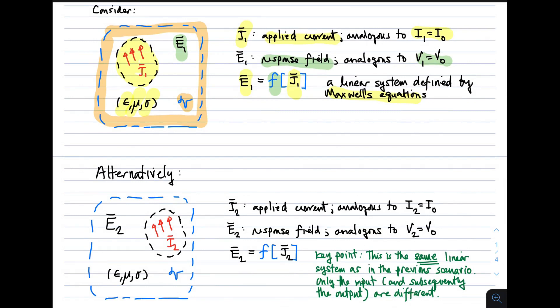So to see what reciprocity means here, we look at another scenario, which occurs in the same volume, V. But here we have currents J2. And these currents J2 are different, and they're in different locations. In general, it's a different distribution of current. And in response, we see a different electric field, E2. So now the input to the system is J2. The output of the system is E2. But here's the key idea. The system itself is the exact same system. We've just observed two different inputs. In one case, the input was a current distribution J1. In the other case, the current distribution was J2. It's the same linear system as in the previous scenario. Only the input, and then subsequently the output, are different. So we've simply observed two different responses to two different inputs for the same system.